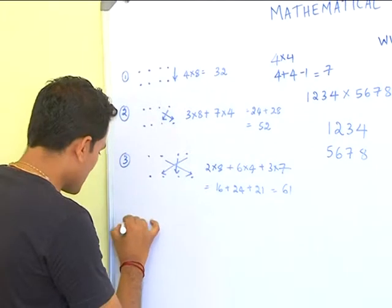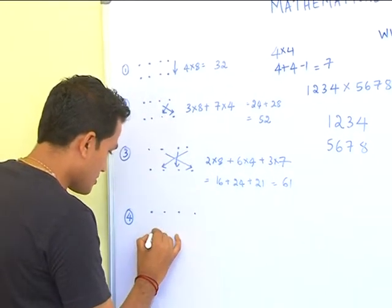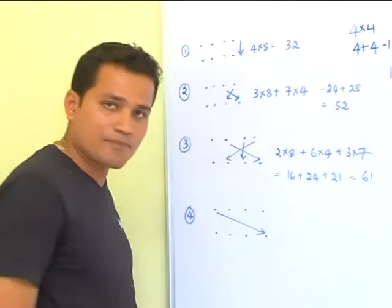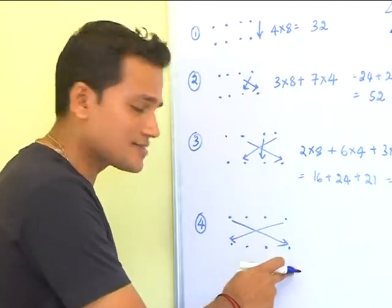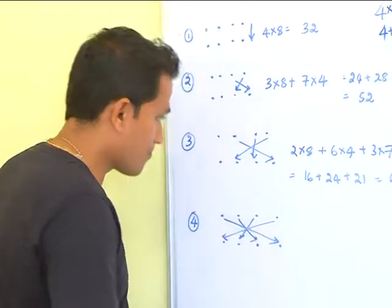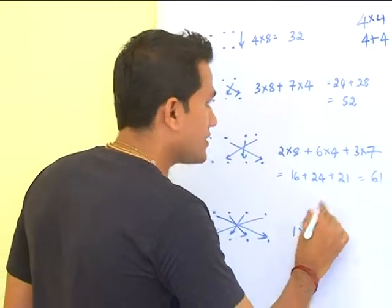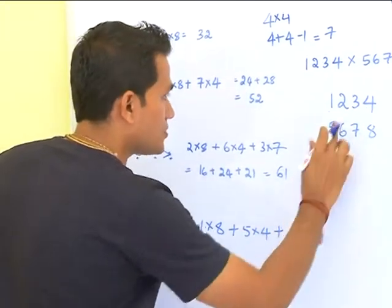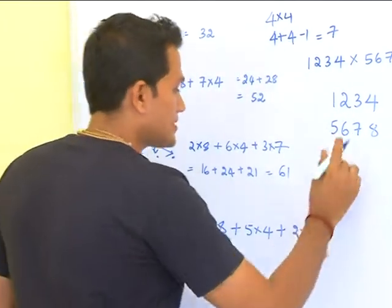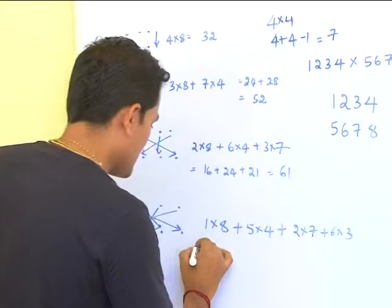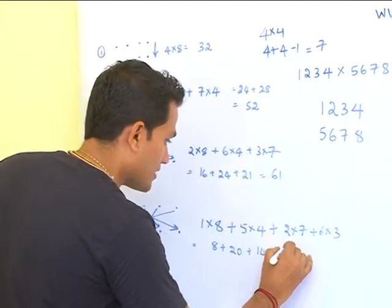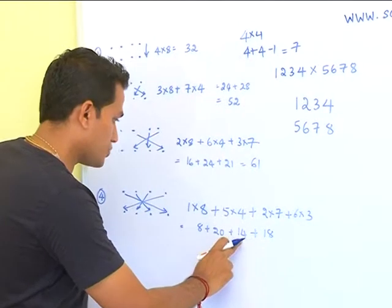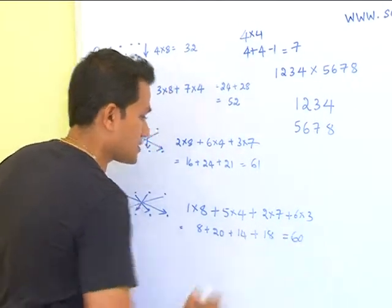Now the fourth step. This is very important, the risk of multiplication taking all the four digits at a time. You multiply the first digit to the last digit. So that would be one into eight plus five into four plus two into seven plus six into three. That's eight plus twenty plus fourteen plus eighteen, which equals eight, twenty-eight, forty-two, sixty.